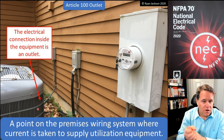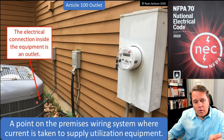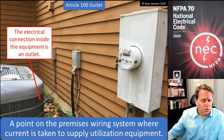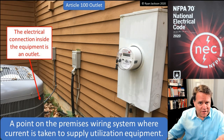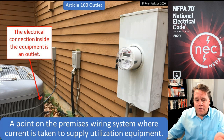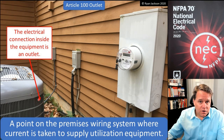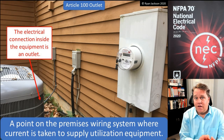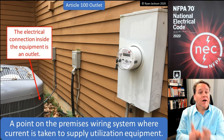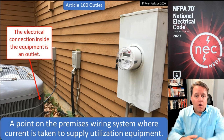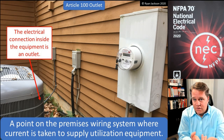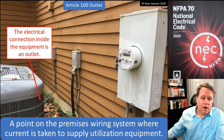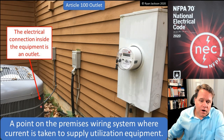When we see rules in 210.8(f), for example, and we need to protect outlets at dwelling units, they're talking about the outlet at an air conditioner. That's why it's not just receptacle outlets, and that's why that section has an exception for lighting outlets — because all of these things are outlets, and the outlets we're talking about in that section would be at the point where it connects to the unit.